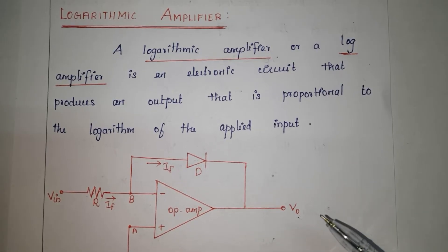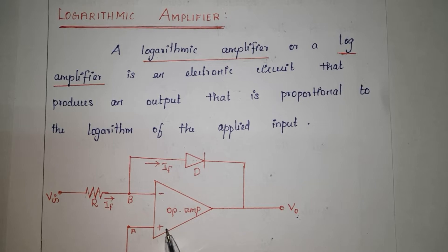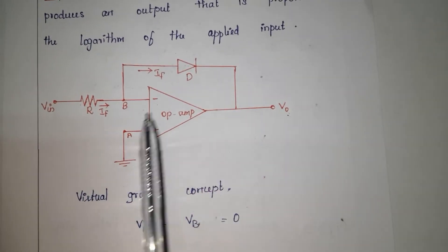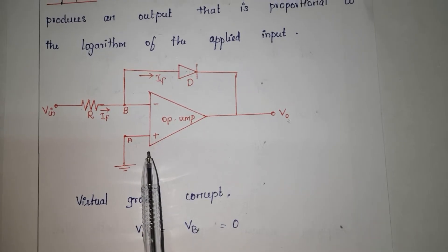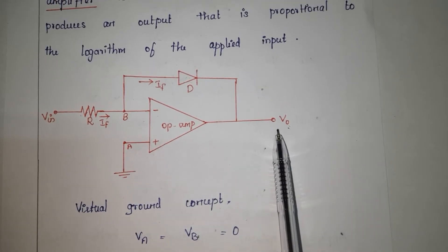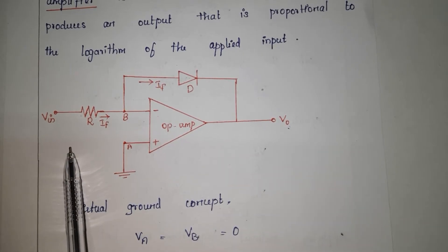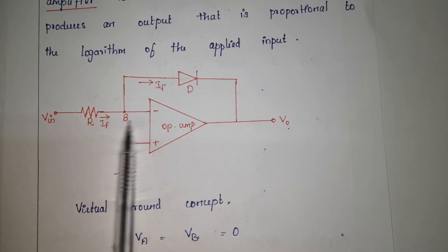In this section, we discuss the op-amp based logarithmic amplifier in detail. This is the circuit diagram of a logarithmic amplifier. An op-amp based logarithmic amplifier produces a voltage at the output which is proportional to the logarithm of the voltage applied to the resistance connected to its inverting terminal.